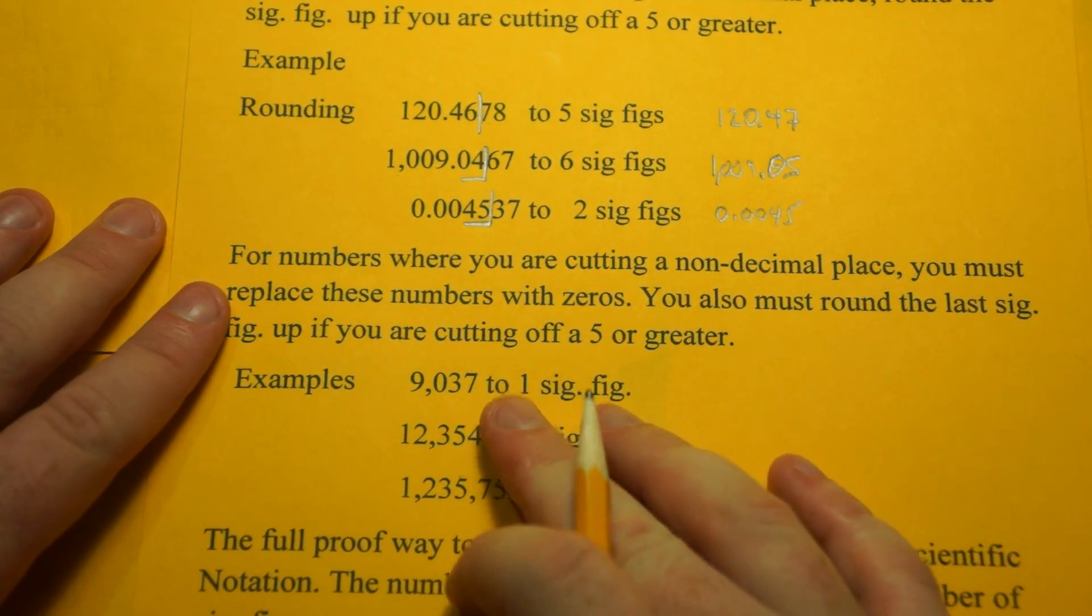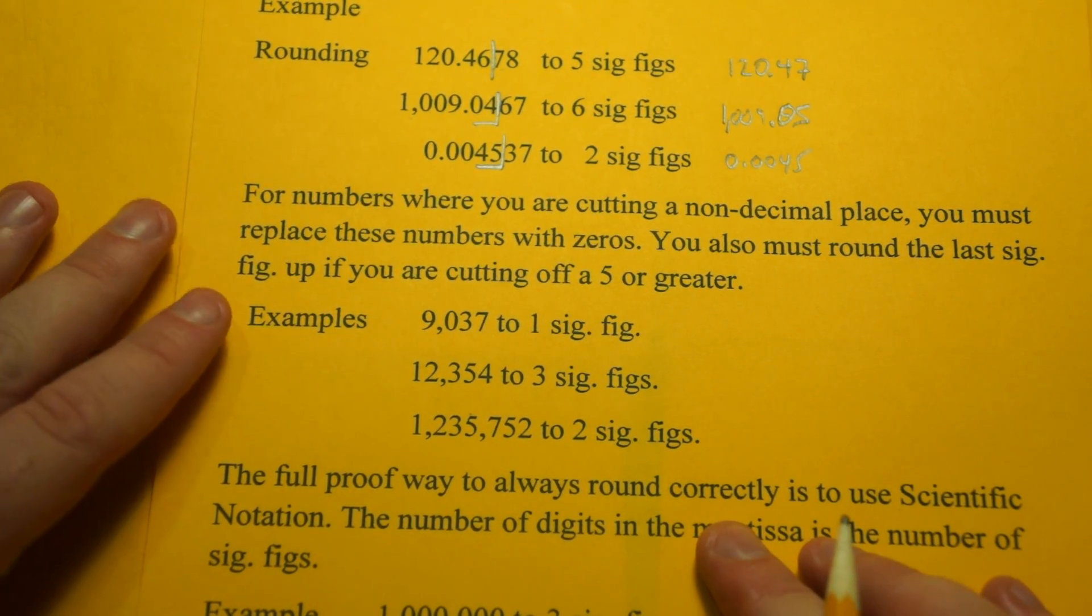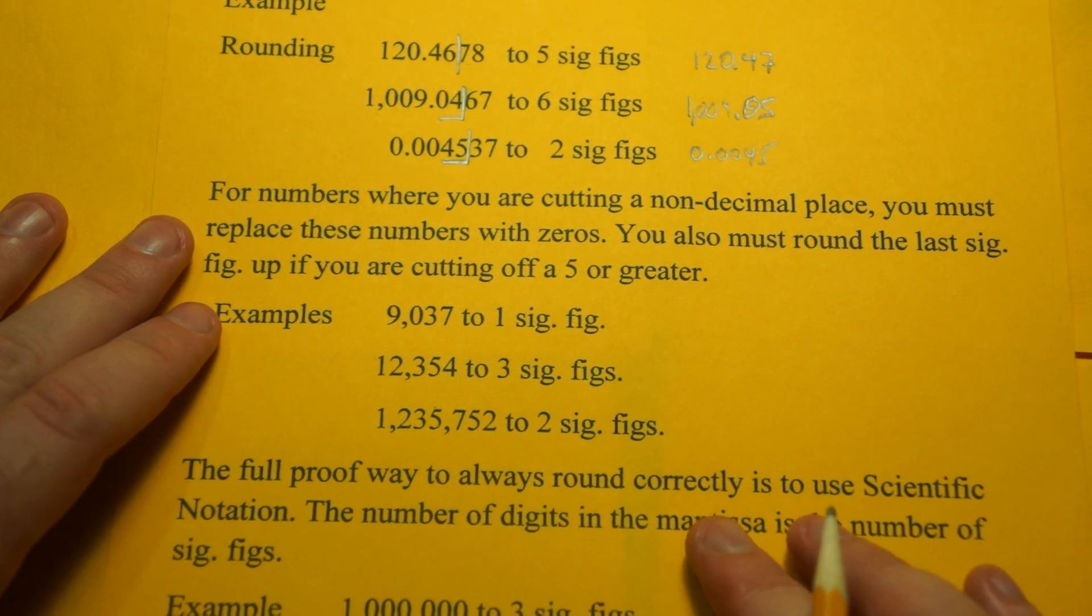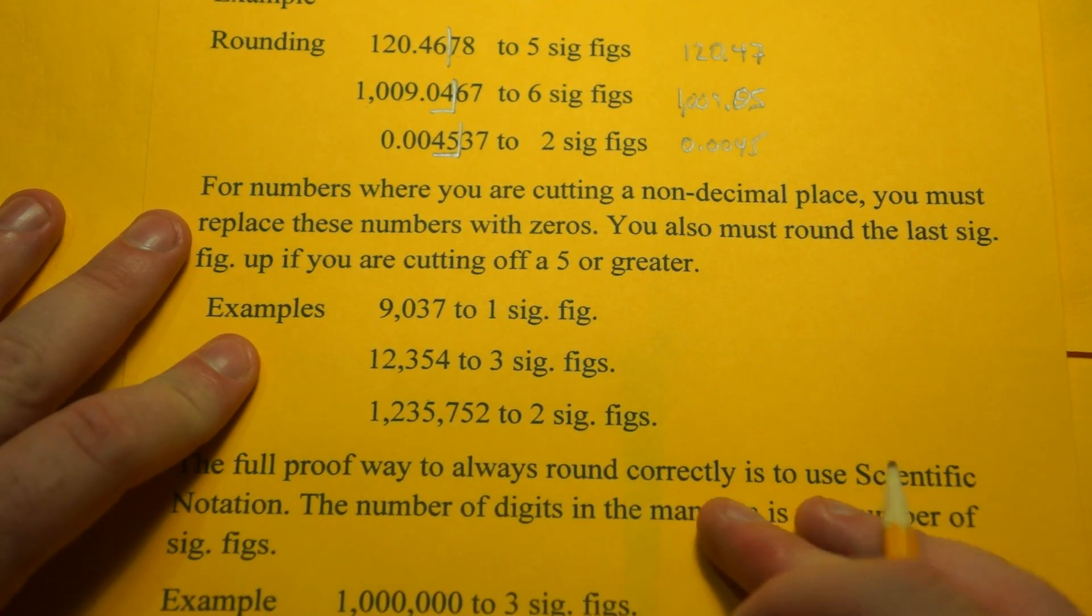Now for numbers where you're cutting off a non-decimal place, so like the 1s, the 10s column, you must replace these numbers with 0s. You also must round the last sig fig up if you're cutting off a 5 or greater.